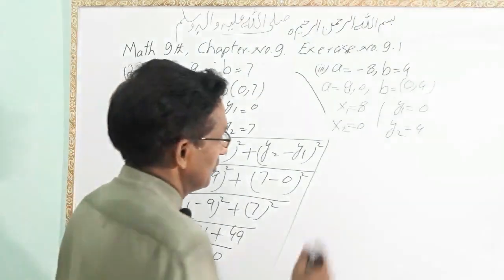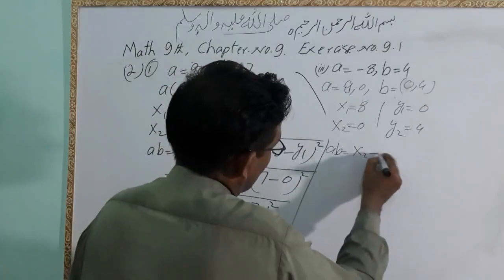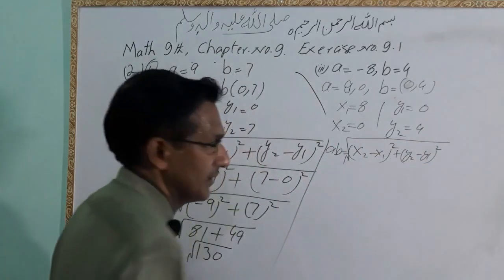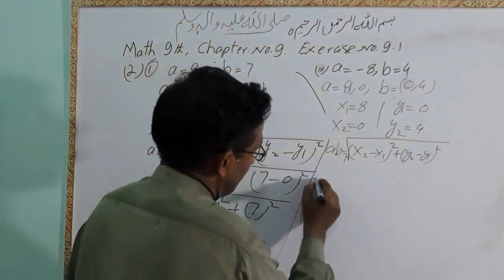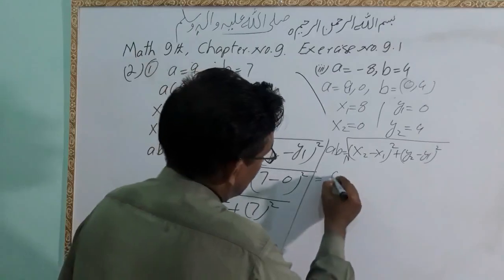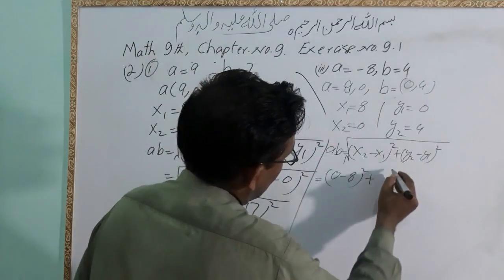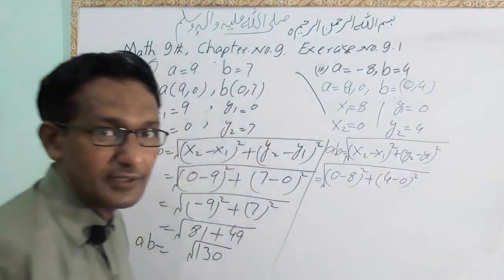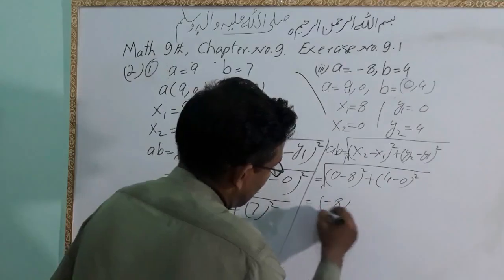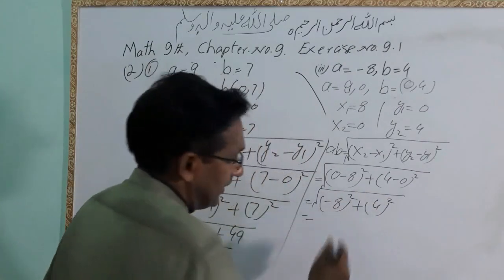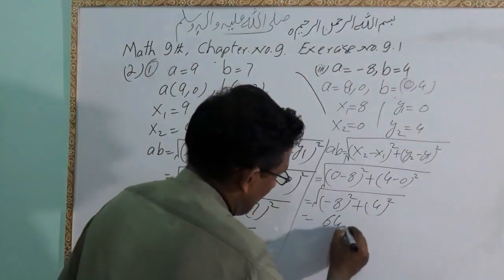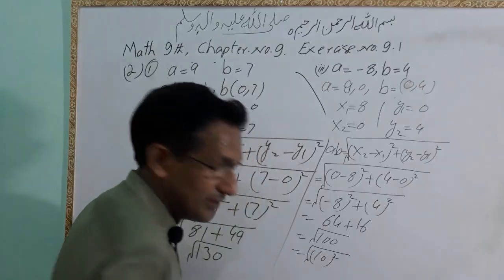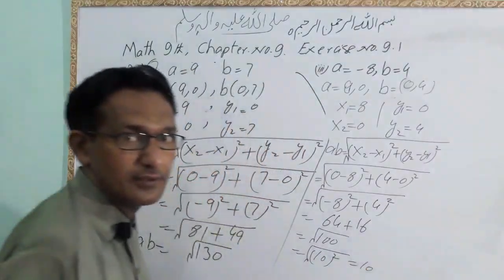Now we will use the distance formula. AB equals square root of (x2 minus x1) squared plus (y2 minus y1) squared. Put the value of x1, x2: zero minus eight, plus four minus zero. AB: zero minus eight gives 8, squared is 64; plus four squared is 16. 64 plus 16 equals 80. Square root of 80 equals 10. This is the answer.